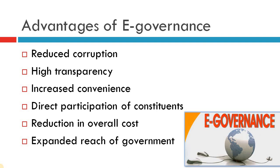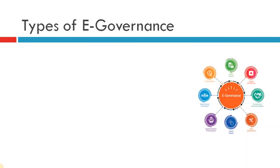Last point: expanded reach of government. With online services, even a person sitting in any corner can reach out to the government. Otherwise, it was very difficult for people living in remote places to get to an office, to get these particular facilities — to get a PAN card, to get an Aadhar card. Now they can reach out to the government very easily. After the advantages, let us see the different types of e-governance.